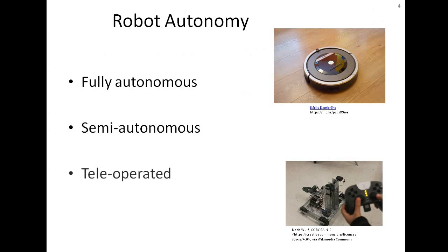Then we have teleoperated robots. For teleoperated robots, the task-completing ability is completely dependent on the human operator — they are controlled remotely by a human being, as shown by a joystick. They are not autonomous at all.